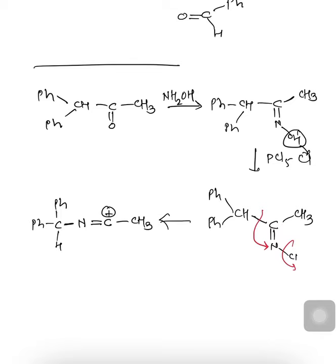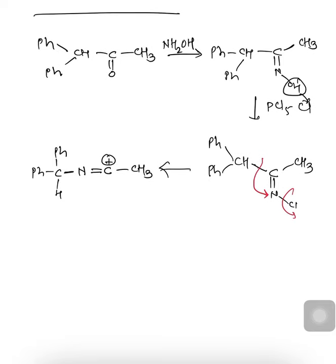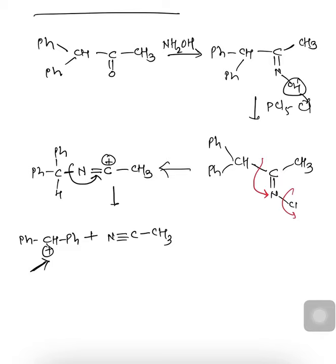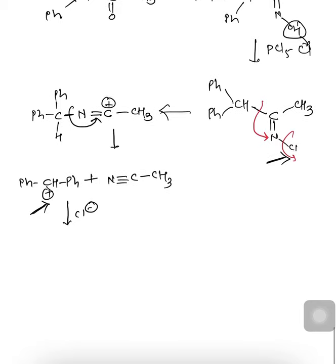After migration, we get Ph-N=C+ with a CH3 group. Again: if there is formation of a stable carbocation, then we can have abnormal Beckmann. In this case, there is formation of N≡C (isocyanate): CH3-C≡N, and the remaining structure Ph-CH+(Ph) — this carbocation is stabilized by two phenyl rings through resonance, making it highly favorable. This carbocation then reacts with Cl− (eliminated earlier) to give Ph-CHCl-Ph. The abnormal Beckmann occurs when formation of a stable carbocation is possible.